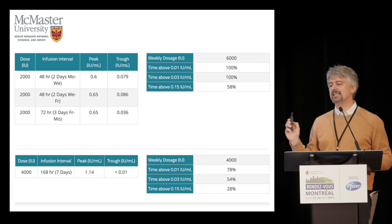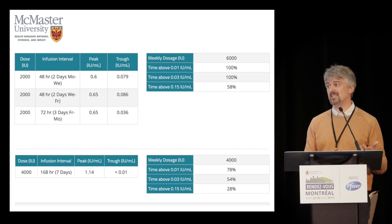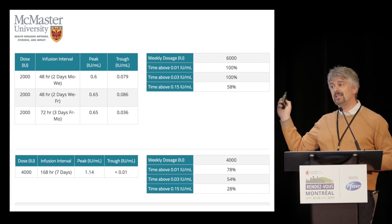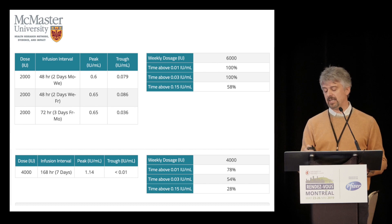PopPK doesn't tell you what the ideal trough is — that's the patient's bleed rate that tells you what the ideal trough is. These tools help you make decisions that are based on evidence.